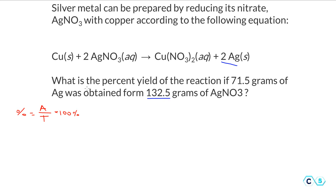Now let's think about what we have here. What is the 71.5 grams of silver — is this the actual or theoretical yield? Because the problem tells us this is how much silver has been produced, this is the actual yield. We know the actual yield of the silver, which is given as a mass: 71.5 grams.